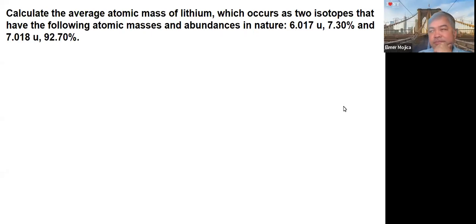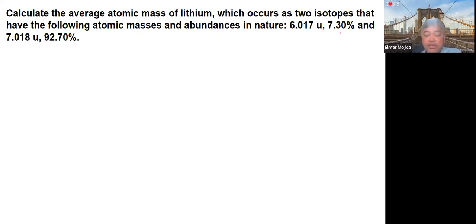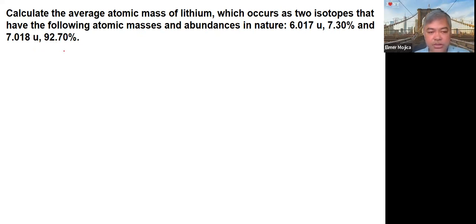This is another example similar to what we've discussed in class. You're asked to calculate the average atomic mass of lithium, which occurs as two isotopes with the following atomic masses and abundances in nature. The first isotope has a mass of 6.017 units and an abundance of 7.30%, and the second isotope has a mass of 7.018 units and an abundance of 92.70%.